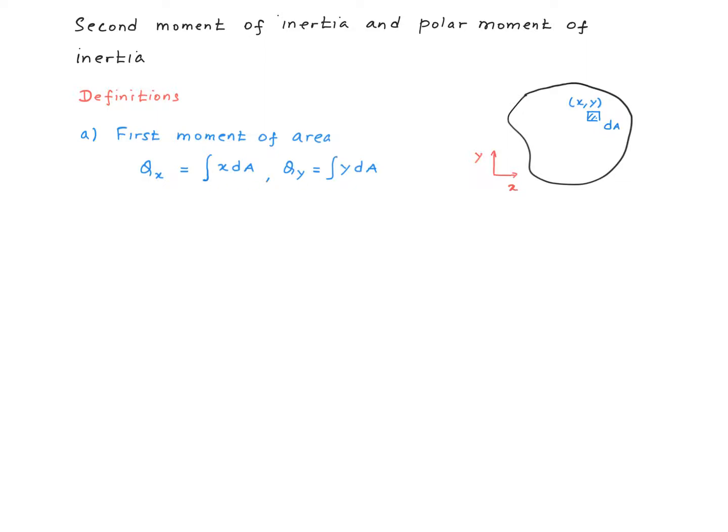These quantities — x times dA integrated over the area, and y times dA integrated over the area — are called the first moment of area. Now within the definition of the first moment of area, we recognize that the centroid that we've talked about so far goes with the first moment of areas.